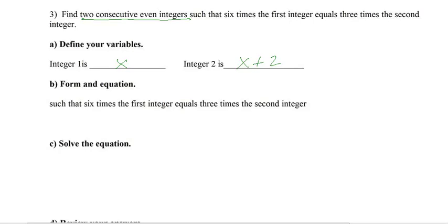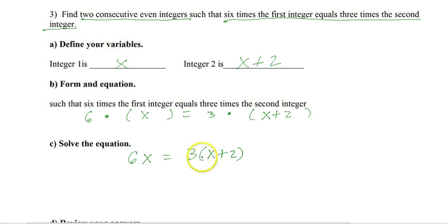If it said four consecutive even, it'd be x, x plus 2, x plus 4, x plus 6. Four consecutive odd, same exact thing. Now the relationship is this translation right here. And I've already written it down here to allow us to translate it. It says such that 6 times the first, the first is x, equals 3 times the second. And the second is x plus 2. And that's it. You just translate it. 6 times first equals 3 times second. So we get 6x equals 3 times x plus 2. And then solve it. So we get 3x plus 6.